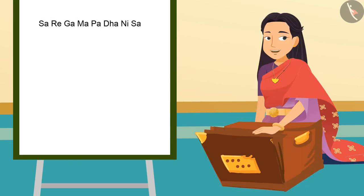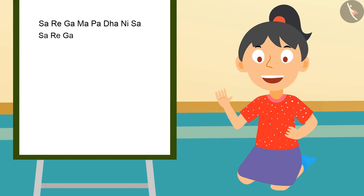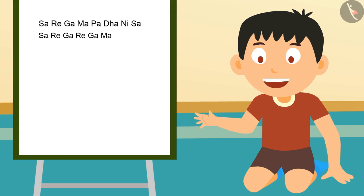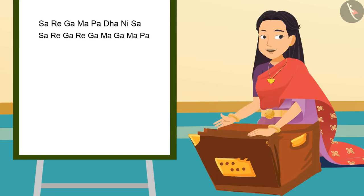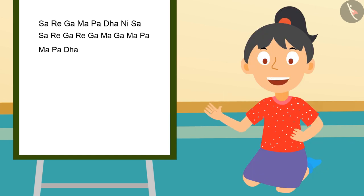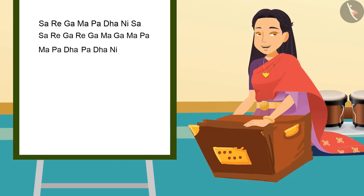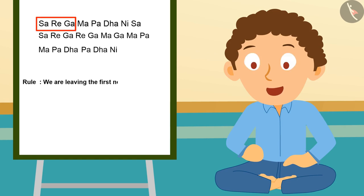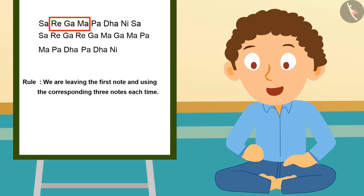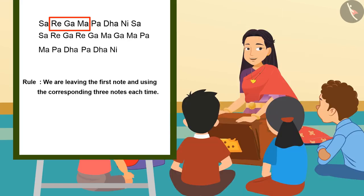Come, let's make a new pattern now. Can we take three notes together? Yes, why not! If we take three notes together like Sa Re Ga, then what will come after this? After this — Ga Ma Pa. Wow! Ma Pa Dha. Wow! Pa Dha Ni. Very good! So what is the rule of this pattern? We are leaving the first note and using the corresponding three notes each time.